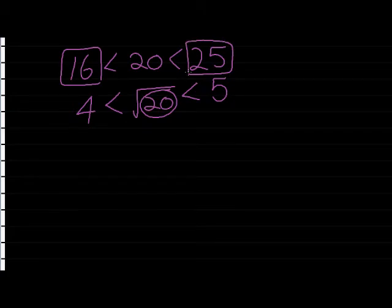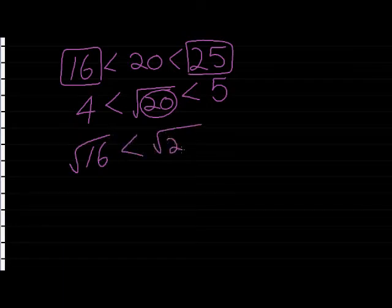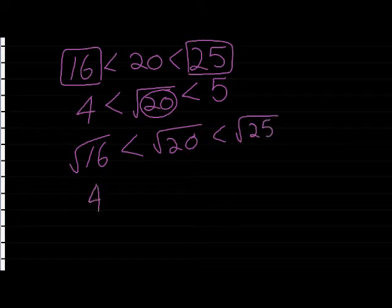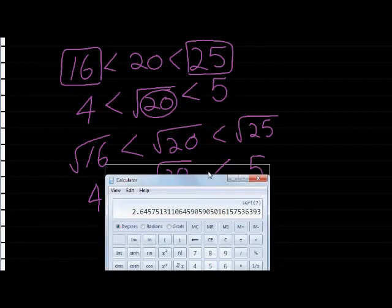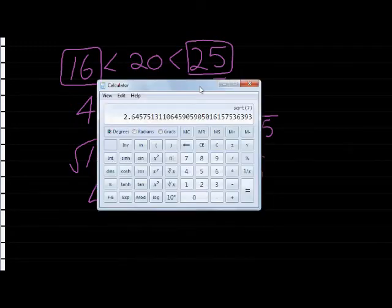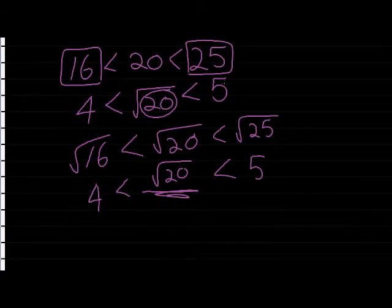And then I simply took the square root of everything, the square root of 16, the square root of 20, and the square root of 25. Which gave me an answer of 4. This is what I want to estimate, so I don't want an answer for that one. And 5. So let's just check whether we've done it right. Is it true that if I take the 20, the square root thereof, I get 4 comma 4. I do get an answer that is bigger than 4, but smaller than 5. Shall we do another example?